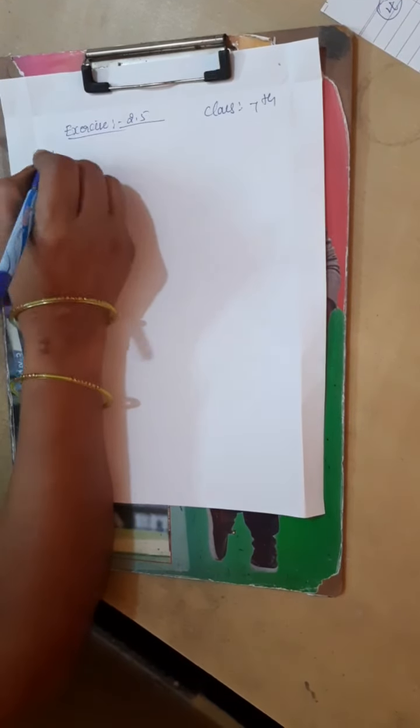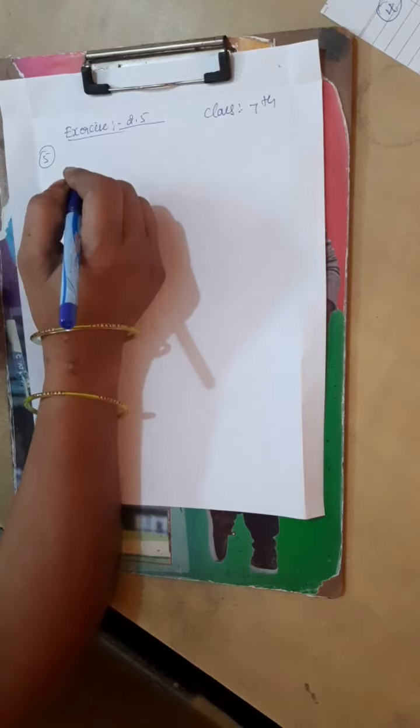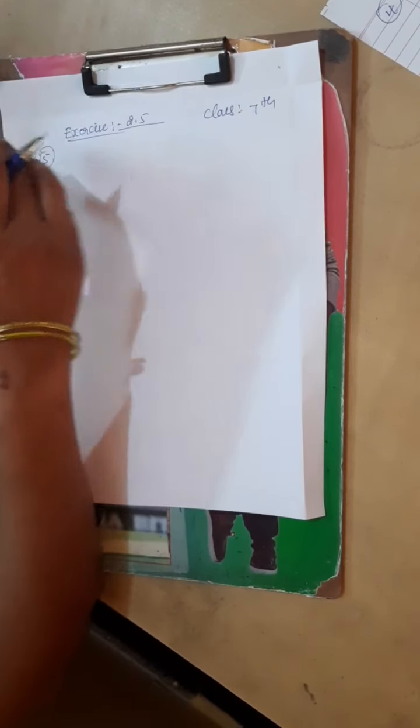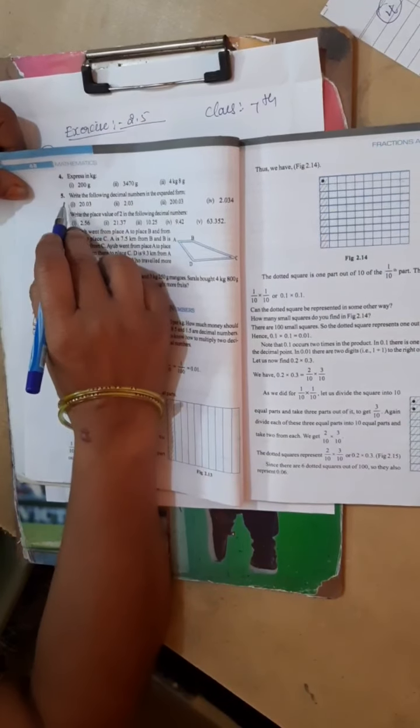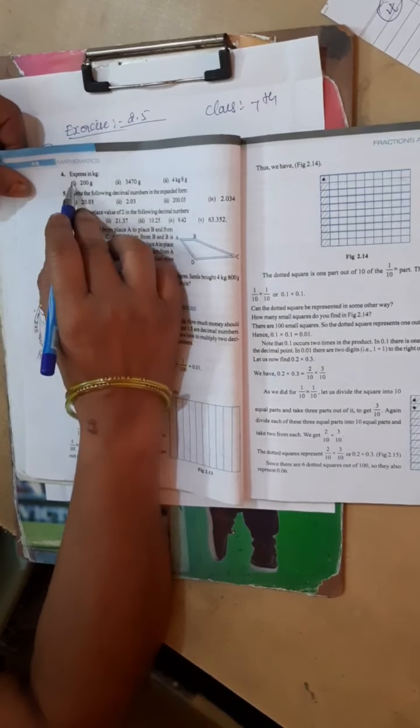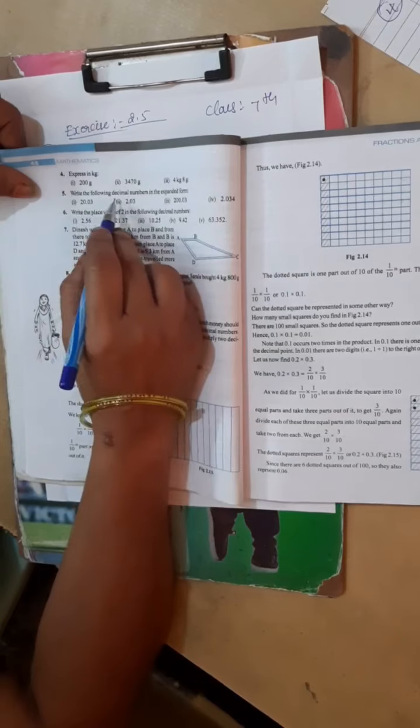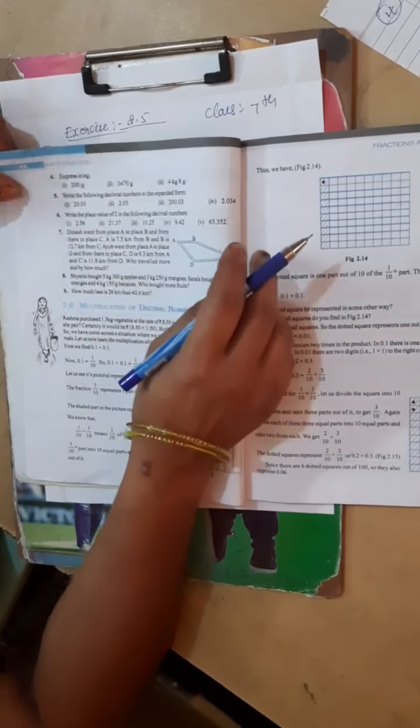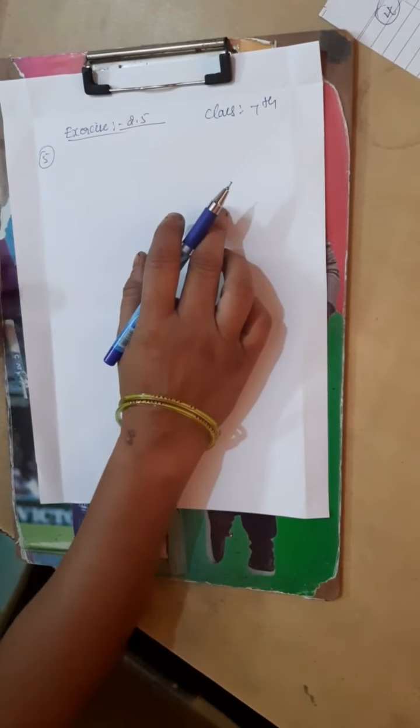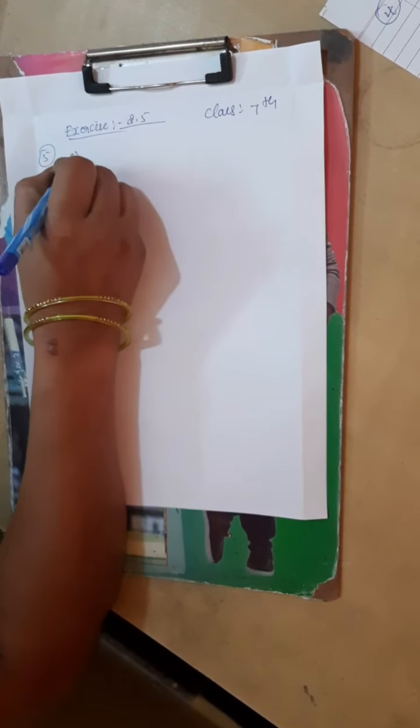So next, I think 5th main I have to start. 5th main: write the following decimal numbers in the expanded form. Listen. So 5th main is, I think 4th main is finished. Write the following decimal numbers in the expanded form.